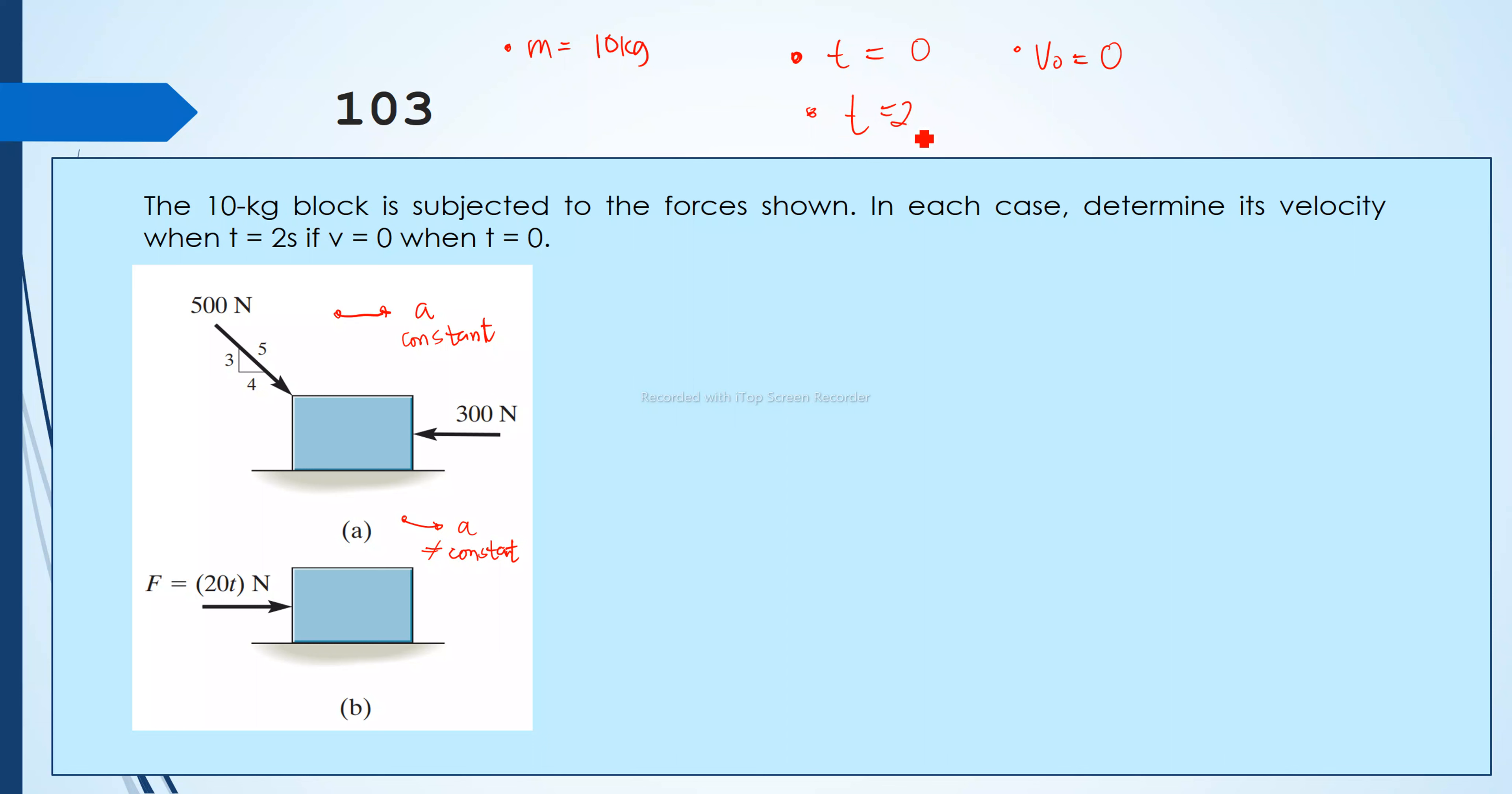Okay, this is just easy for case a. Again, don't forget to draw the FBD. There's a force acting on the side that is 300 newtons, and then we have a force here that is 500 newton. And then let's try three four five triangle.